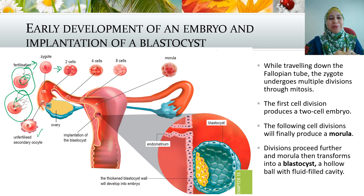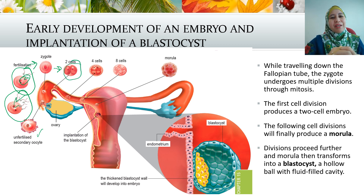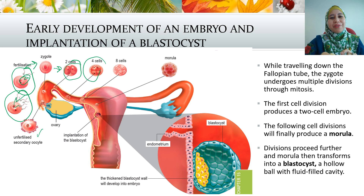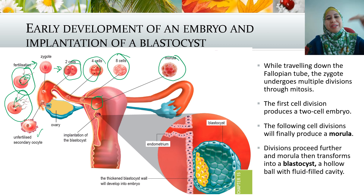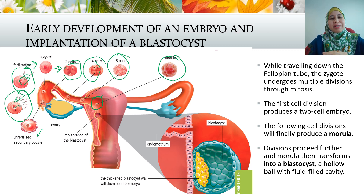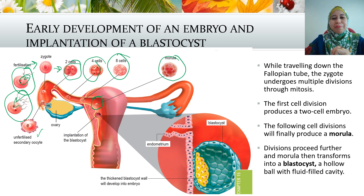The zygote will undergo mitosis: the first division produces two cells, followed by four cells, eight cells, and then what we call the morula. The morula then begins to enter the uterus, where mitosis continues and the morula transforms to become the blastocyst.